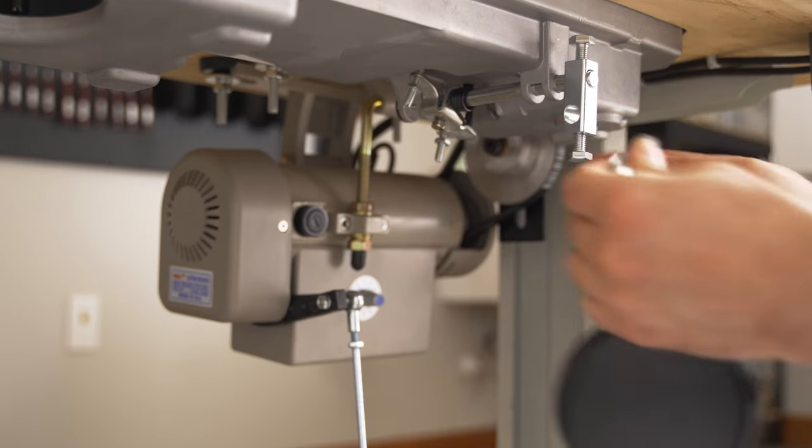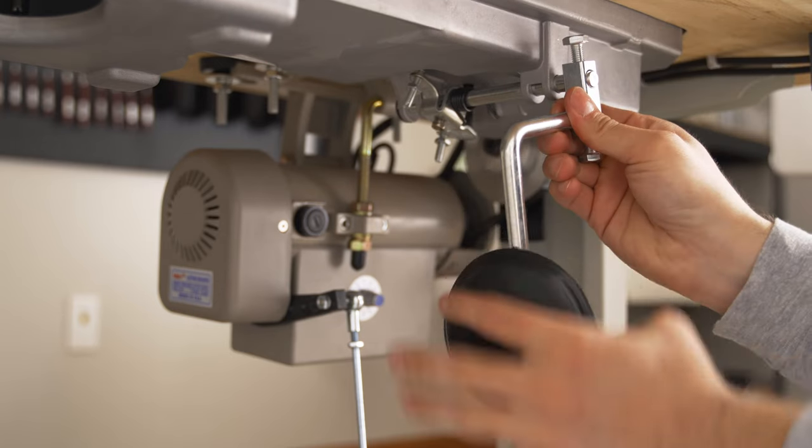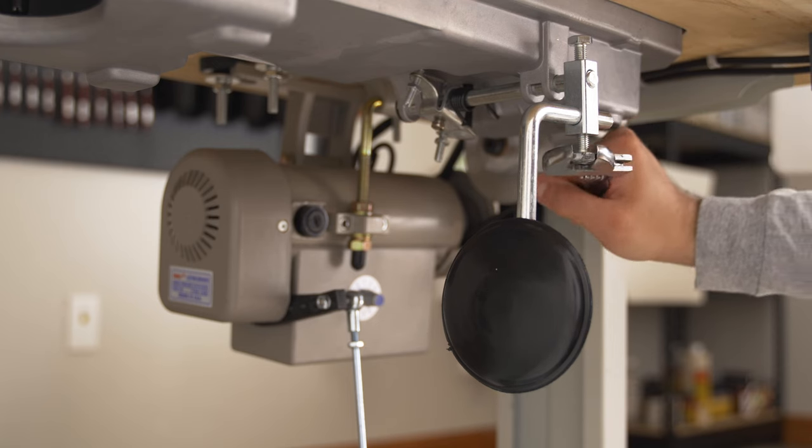To install the knee lift, simply attach it to the oil pan with the bracket, tightening the screw to secure. You can adjust the rubber knee pad up or down to accommodate your height.